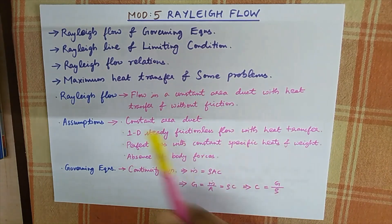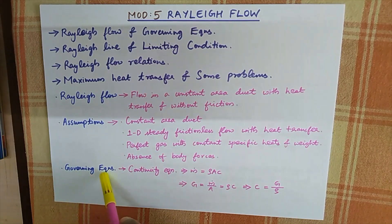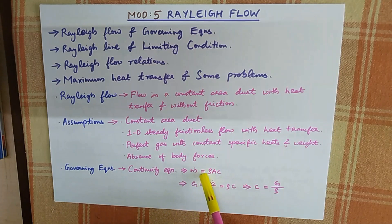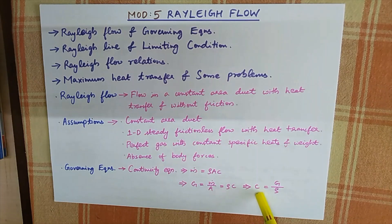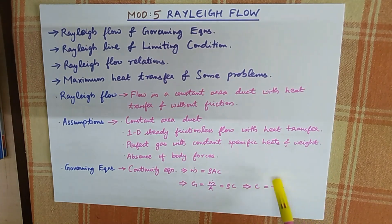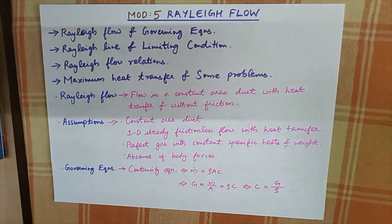With these assumptions, the governing equations for Rayleigh Flow are as follows. The first is the continuity equation: M-dot equals rho times A times C, or we can write M-dot by A equals mass flux density G, which equals rho times C. So C equals G divided by rho. This is the same step we used when deriving governing equations for Fanno Flow.